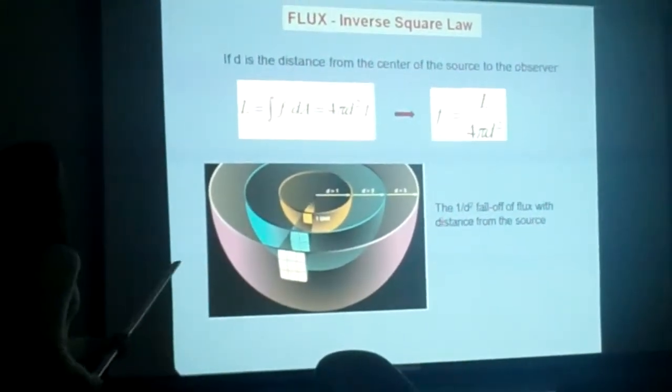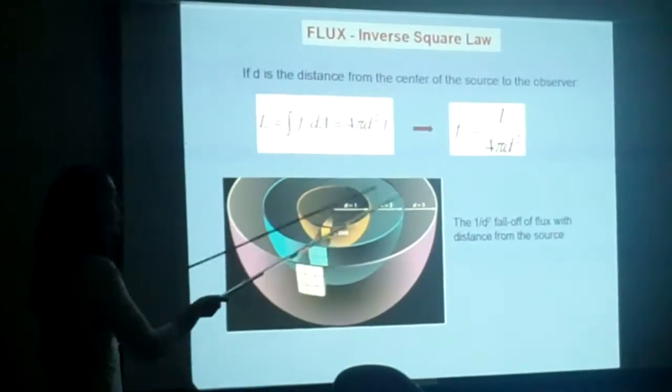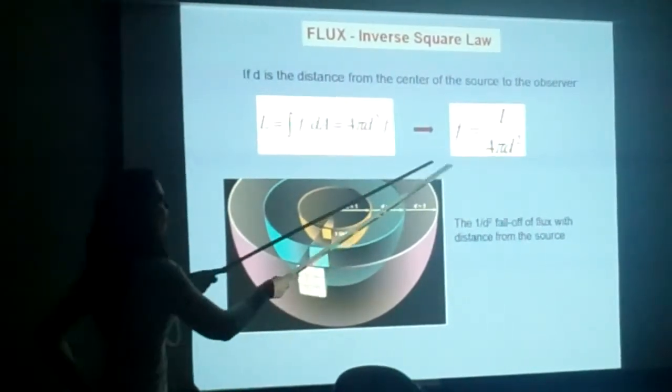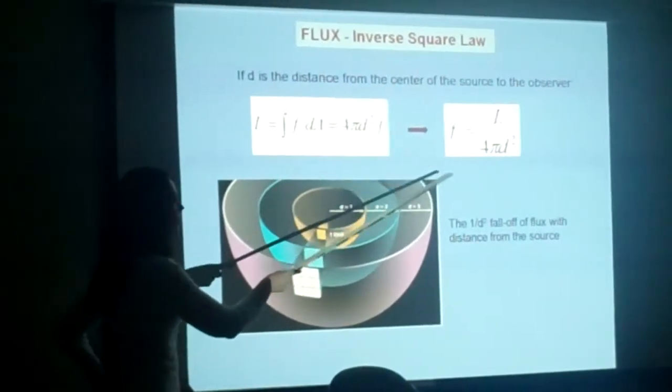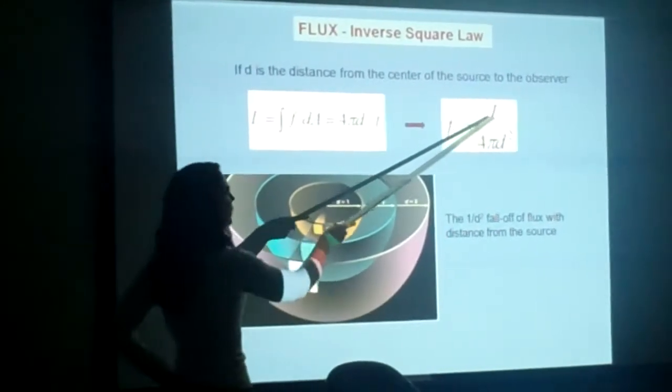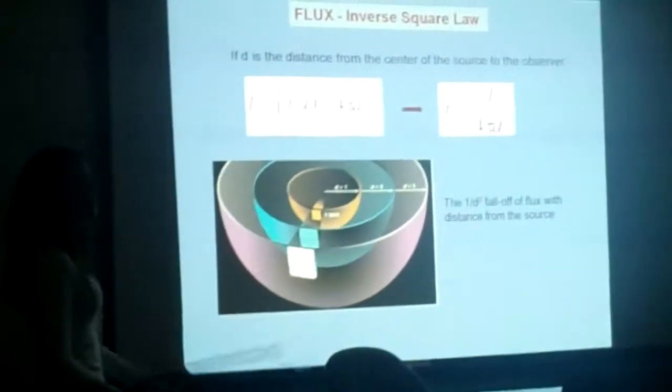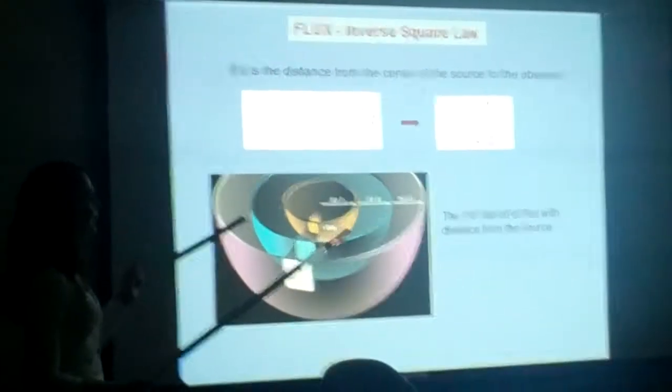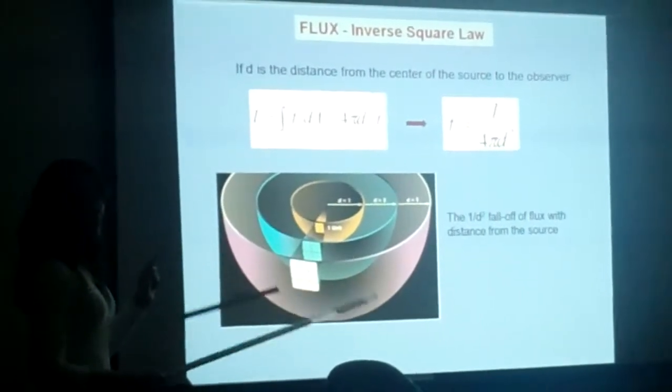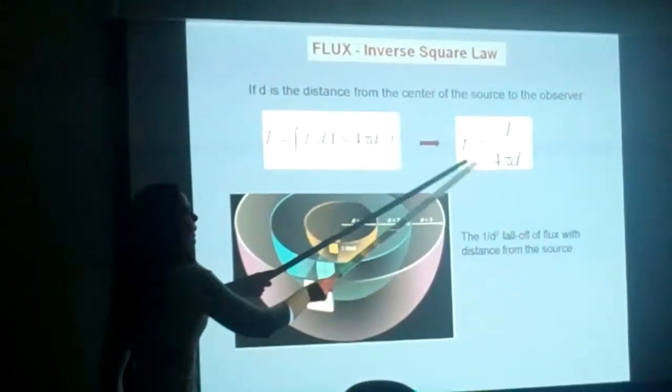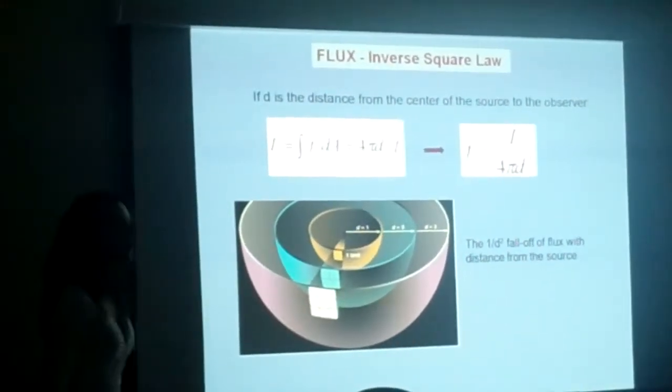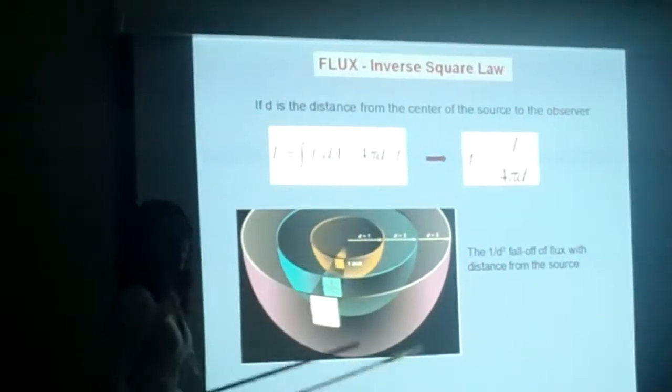The flux is inversely proportional to the distance. In the case of an isotropic source, the flux is the ratio between the luminosity and the surface of the sphere corresponding to the distance between the observer and the source. This is important because for gravitational waves, we have a different relation with the distance.